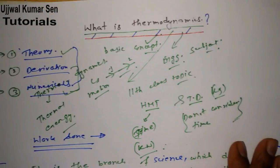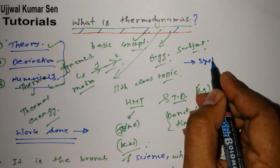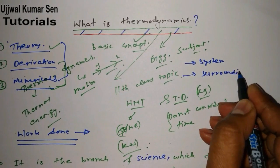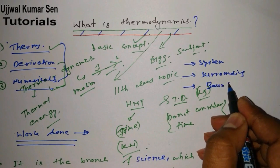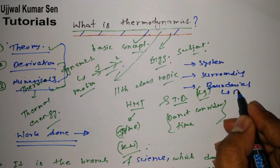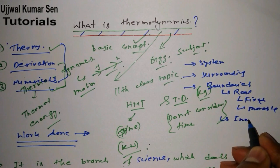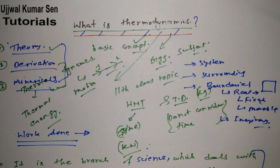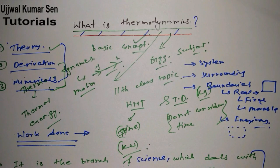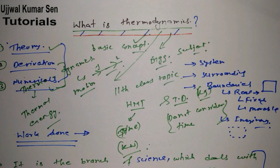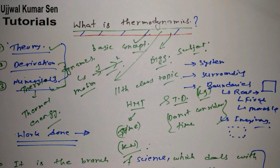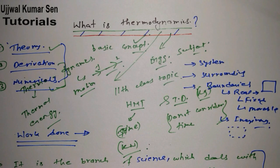For basics, you need to understand what is a system, what is a surrounding, and what are boundaries. There are many types of boundaries: real boundaries — which include fixed boundary and movable boundary — and imaginary boundaries. Real boundary is denoted by a continuous line; imaginary boundary is denoted by a dotted line. You also need to understand what is the universe.